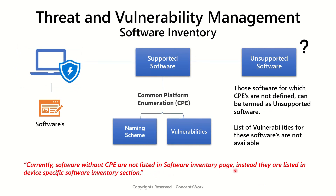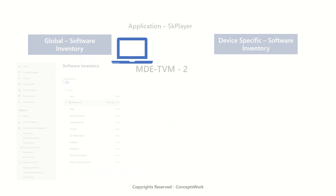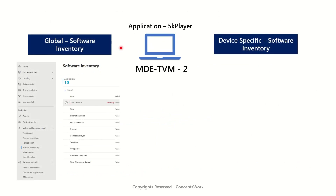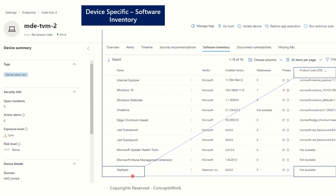To summarize from a console experience perspective: softwares without CPE are not listed in the software inventory page; instead they are listed in the device-specific software inventory section. In my demo I have a device where I installed an app called 5K Player. When I go to the software inventory list it is not showing up there, but if I navigate to the device and click on software inventory it is listed there, and the product CPE is showing as 'not available.' I'm honestly not sure why Microsoft Update Health Tools and Intune Management Extension also don't have CPE defined.